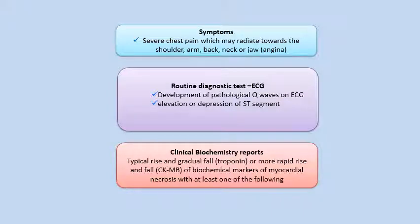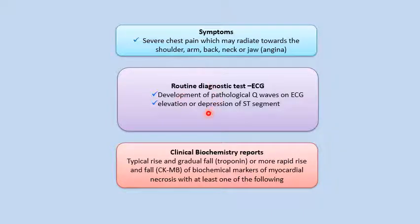People with myocardial infarction usually develop very severe chest pain, called angina. The routine diagnostic test for MI is electrocardiography, where we can see pathological Q waves and elevation or depression of ST segments. We can complement these ECG findings using clinical biochemistry. In certain instances where ECG changes are not visible, we can still detect abnormalities in clinical biochemistry reports.